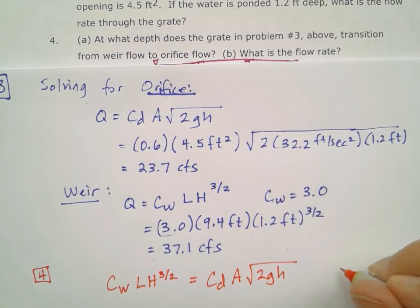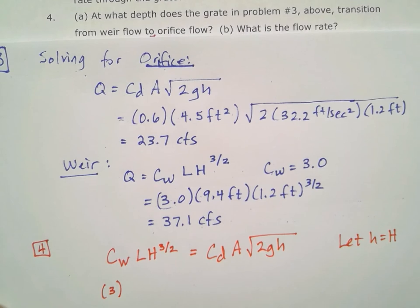We're going to let H equal H so we'll have that variable on both sides to solve for. Putting in our values, we have 3 for the weir coefficient, assuming it's a free flow weir, 9.4 feet for the weir length, and then the unknown H^(3/2).